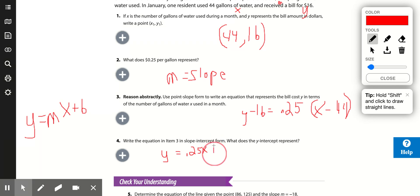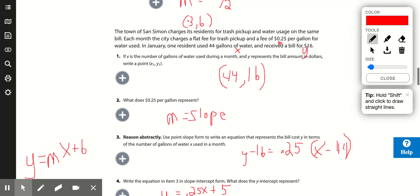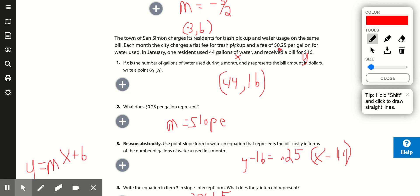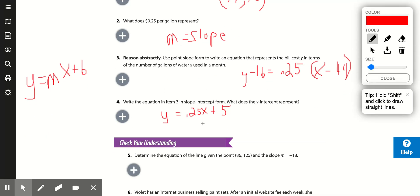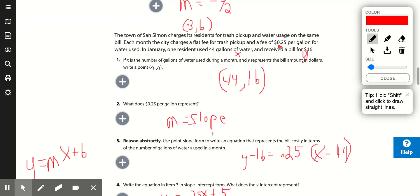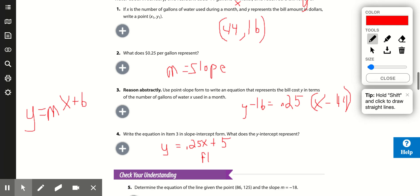There it is, slope-intercept form. I just had to solve for y real quick. What does the y represent? That's the flat fee for trash pickup, because when you haven't used any gallons of water, your x is zero, you haven't used any water, but you do have to pay a flat fee for the pickup. You're going to be paying five dollars a month even if you don't use any water.